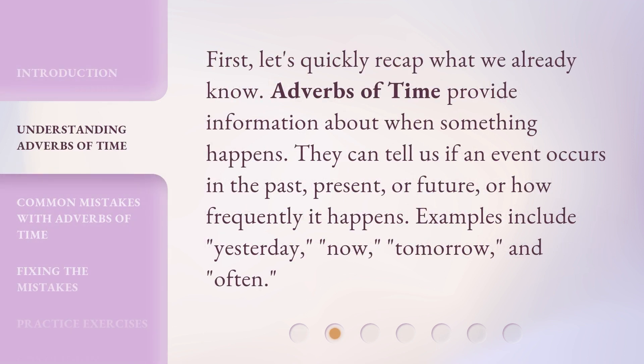First, let's quickly recap what we already know. Adverbs of time provide information about when something happens. They can tell us if an event occurs in the past, present, or future, or how frequently it happens. Examples include: yesterday, now, tomorrow, and often.